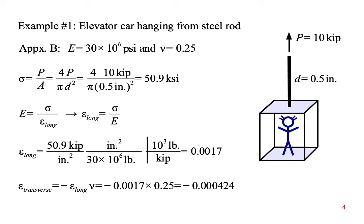Here's an example problem of an elevator car suspended by a steel cable. We'll say the cable is equivalent to a steel rod with a half-inch diameter. The car plus passenger weigh 10 kips, so the stress in the rod is 10 kips divided by the cross-sectional area of the rod. The stress is 50.9 ksi.